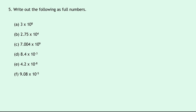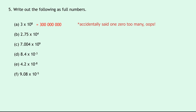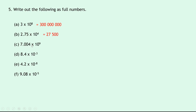The last question, question five: write out the following as full numbers — this is the opposite of what we were doing in question four. For part a, 3 times 10 to the 8 gives 300,000,000. Part b, 2.75 times 10 to the 4 — moving the decimal place to the right 4 times gives 27,500. Part c, 7.004 times 10 to the 9 becomes 7,004,000,000.